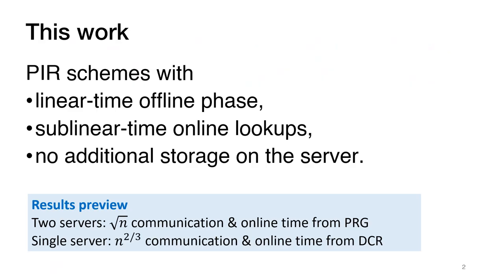In this work, we present a new method for making PIR faster. Specifically, our new PIR schemes push the bulk of the work to a preliminary offline phase, during which the client fetches a short string from the server. In a subsequent online phase, the client can privately query the database, and the server can respond very quickly, in time sublinear in the database size. Moreover, our schemes do not require any additional storage on the servers.